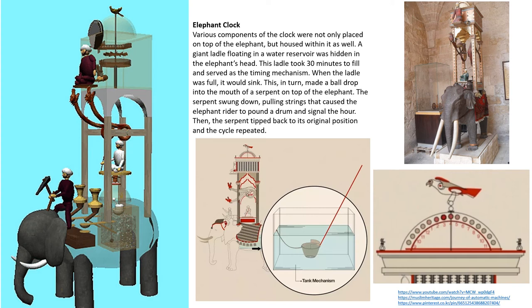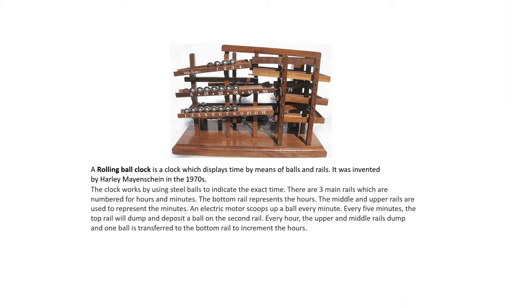The inventor of the elephant clock, Al-Jazari, made several other designs using the water clock mechanism as a basis. Another notable timepiece is the electro-mechanical rolling ball clock, with its idea reconstructed around 1955 incorporating a newer concept of the second. The clock uses steel balls to indicate exact time across three main rails numbered for hours and minutes. The bottom rail represents hours, while the middle and upper rails represent minutes. An electric motor scoops up a ball every minute; every five minutes the top rail dumps and re-deposits a ball onto the second rail; and every hour both upper rails dump and transfer one ball to the bottom rail, adding an hour.